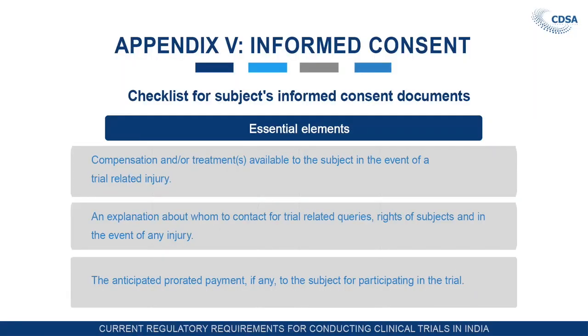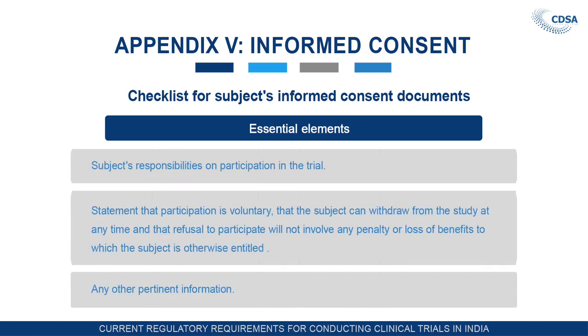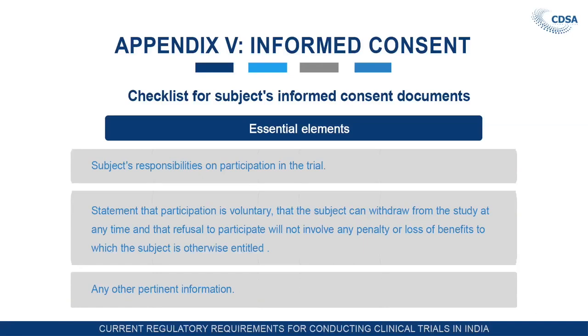An explanation about whom to contact for trial-related queries, rights of the subject, and in the event of any injury — in case of injury or SAE, the telephone number, email, and fax number of the contact must all be mentioned. The anticipated pro-rated payment if any to the subject for participating in the trial, and subject responsibilities on participation in the trial must also be stated. A statement that participation is voluntary, that the subject can withdraw from the study at any time, and that refusal to participate will not involve any penalty or loss of benefit — subjects must be clearly informed that participation is fully voluntary and they can withdraw at any point.